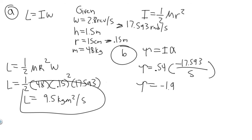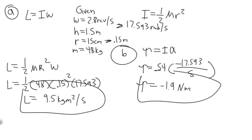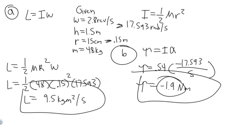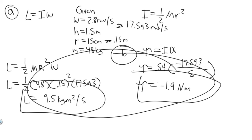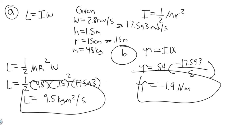The units for torque are newton meters. The negative sign specifies the direction — it's decelerating. So the torque required is 1.9 newton meters. To summarize: Part A gives angular momentum of 9.5 kg·m²/s, and Part B gives a torque of 1.9 newton meters. Hopefully you found this useful.